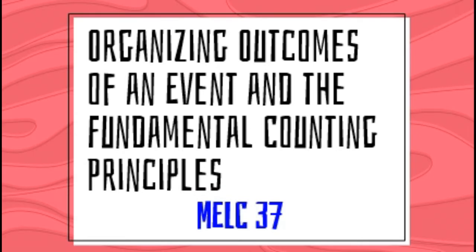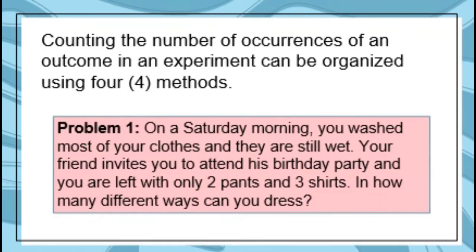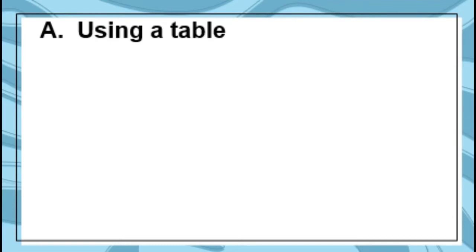Now let's discuss organizing outcomes of an event and the fundamental counting principle, MELC number 37. Counting the number of occurrences of an outcome in an experiment can be organized using four methods. Problem number 1: on a Saturday morning you wash most of your clothes and they are still damp. Your friend invites you to attend his birthday party and you are left with only two pants and three shirts. In how many different ways can you dress?